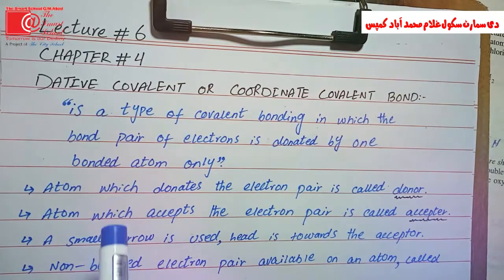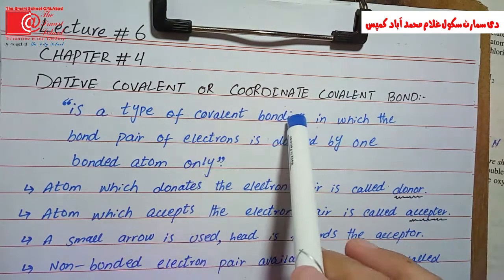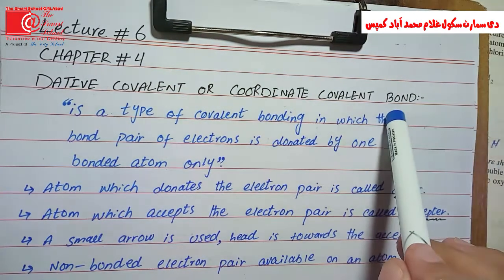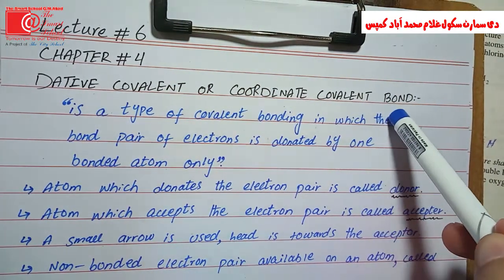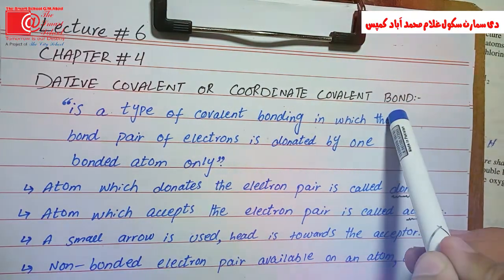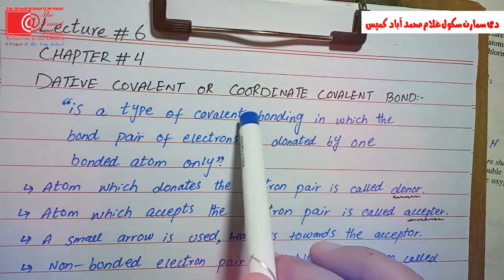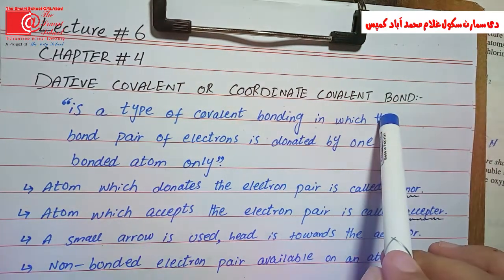This is your chemistry class and we are studying chapter number 4. Today's topic is Dative Covalent or Coordinate Covalent Bond. In the last lectures, we studied the ionic bond and the covalent bond and their types. Today we have to study Dative Covalent or Coordinate Covalent Bond.